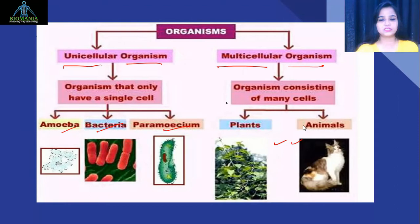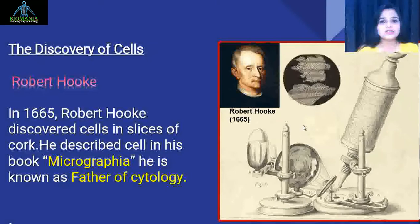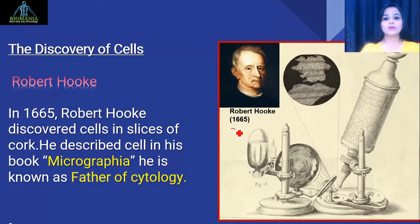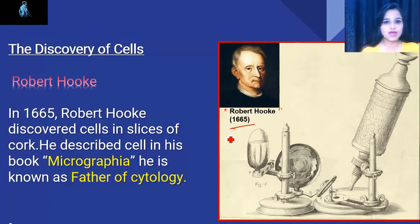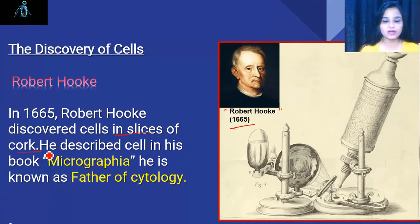Now let's move to the main topic: who discovered the cell first? Make your pen and notebook ready so you can write each point properly. The first discovery of cells was by the great scientist Robert Hooke. In the year 1665, he discovered the cell for the first time. He discovered it in slices of cork — he took a piece of cork, cut it into slices, and then observed it under the microscope.